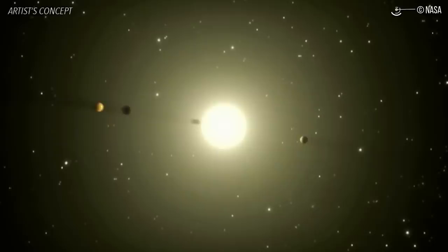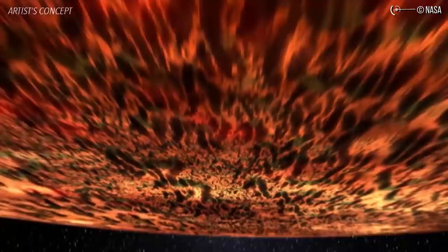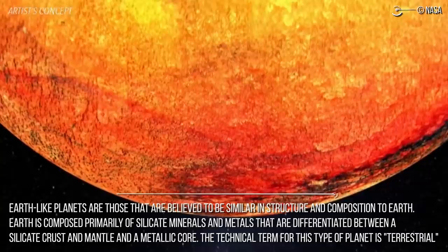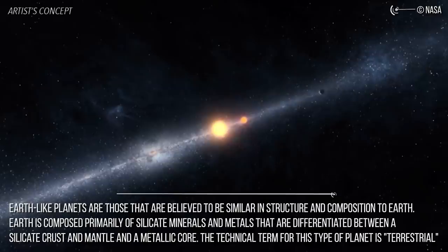But first, a few things need to be clarified, not the least of which is terminology. For example, what does Earth-like mean? Simply put, Earth-like planets are those that are believed to be similar in structure and composition to Earth. Earth is composed primarily of silicate minerals and metals that are differentiated between a silicate crust and mantle and a metallic core.